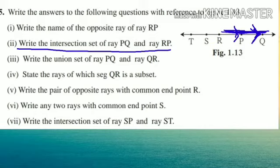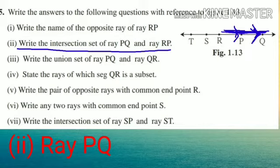Next question: write the intersection set of ray PQ and ray RP. Intersection means the common part — a common segment, line, or point between two rays is called the intersection set. Observing the figure: ray PQ is going to the right-hand side. Ray RP is also going to the right-hand side, and when RP moves forward it meets PQ. So the intersection — the common part — is ray PQ. Your answer is ray PQ.